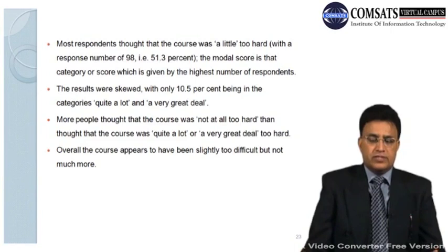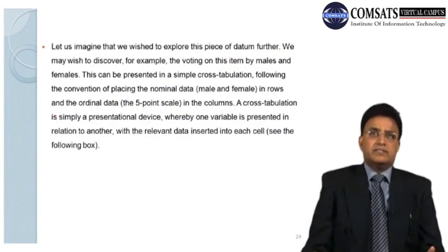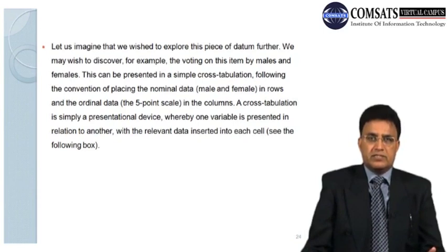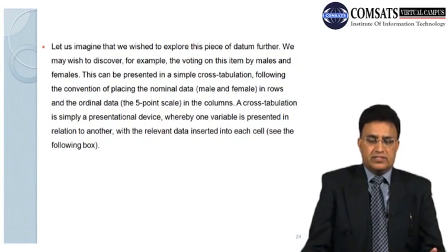We may wish to explore this data further, for example the voting on this item by males and females. This can be presented in a simple cross-tabulation, following the convention of placing the nominal data (male or female) in rows, and the ordinal data (the five-point scale) in columns. A cross-tabulation is simply a presentational device whereby one variable is presented in relation to another, with the relevant data inserted into each cell.